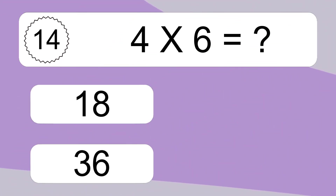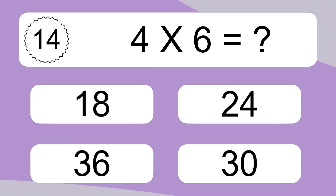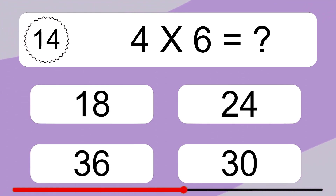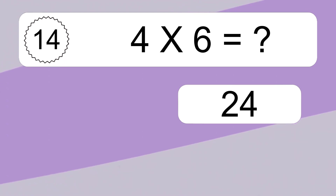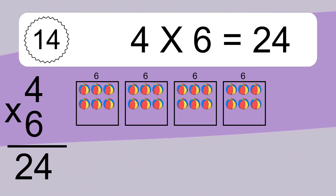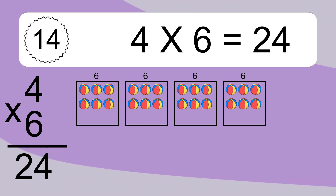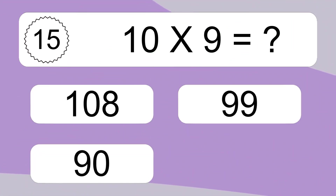4 times 6 equals what? 4 times 6 equals 24. We have 4 boxes, and each box has 6 colorful balls inside. If you count all the balls in all the boxes together, you will have 4 times 6 balls. This equals 24 balls. 10 times 9 equals what?